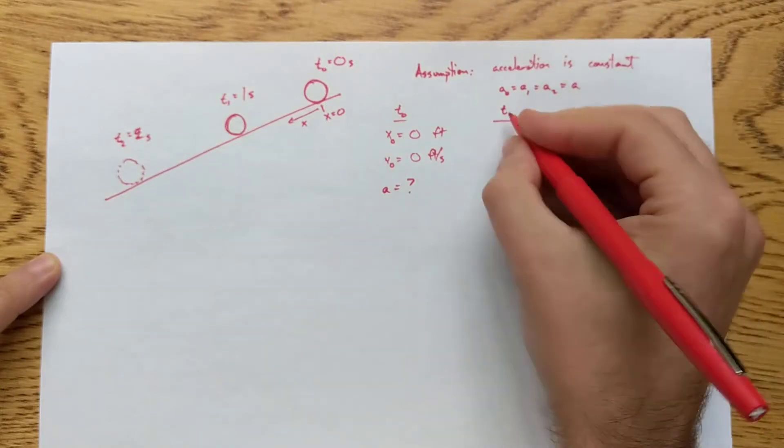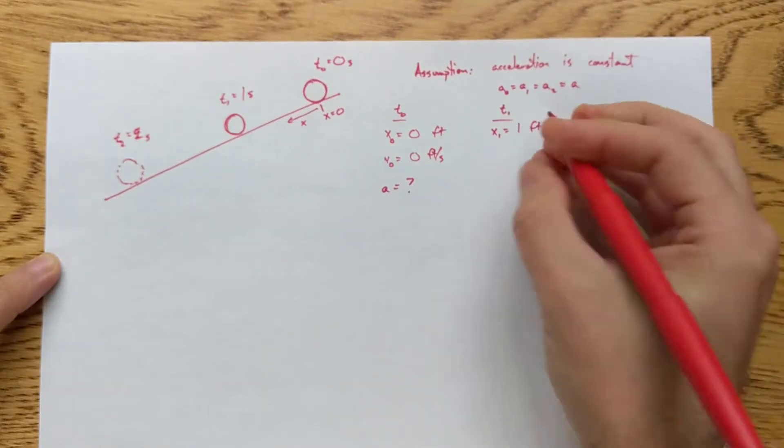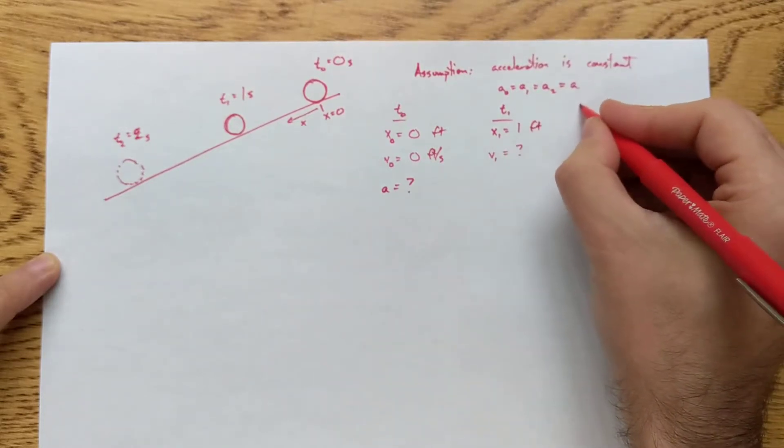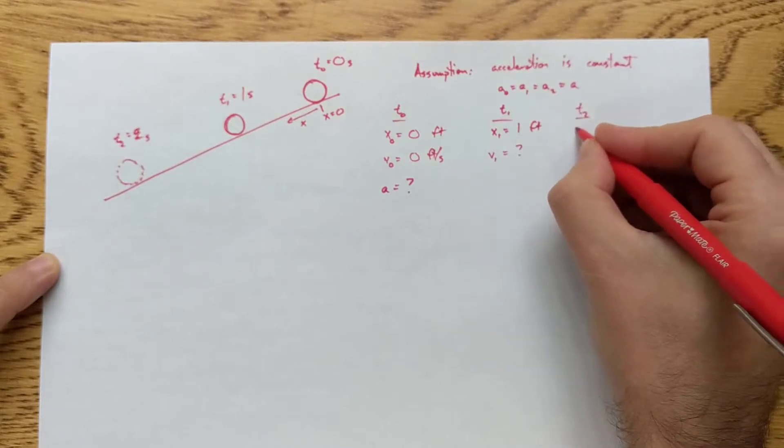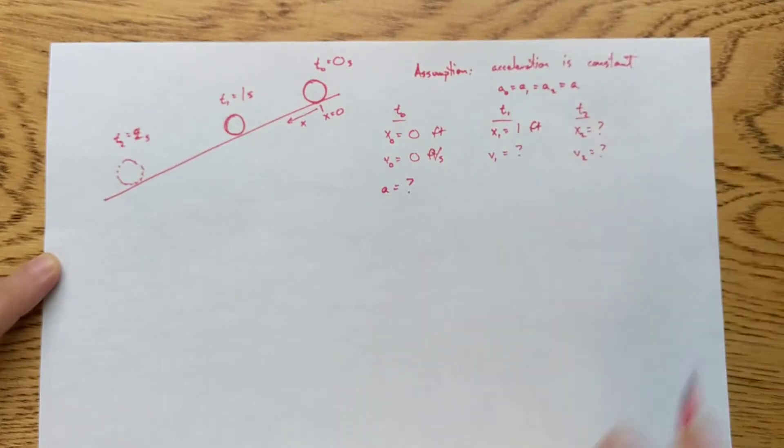Now at t1, I'm given that the ball has moved one foot. I don't know what the velocity is yet. And the acceleration is going to be the same. t2, I don't know anything. Story of my life.